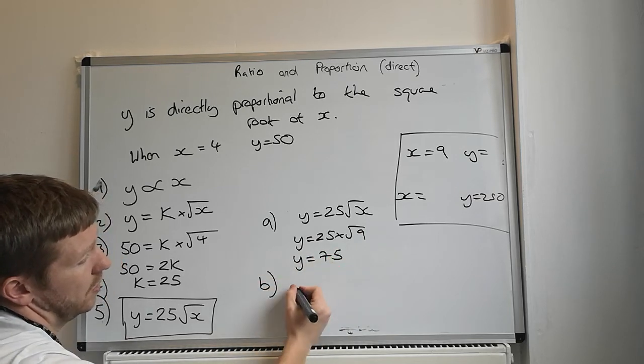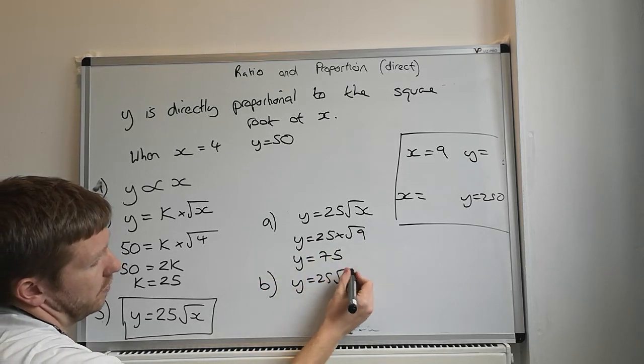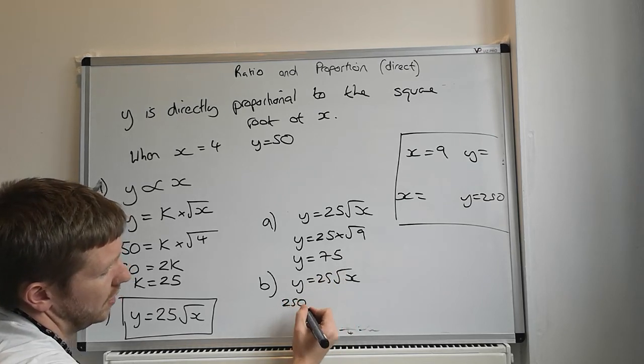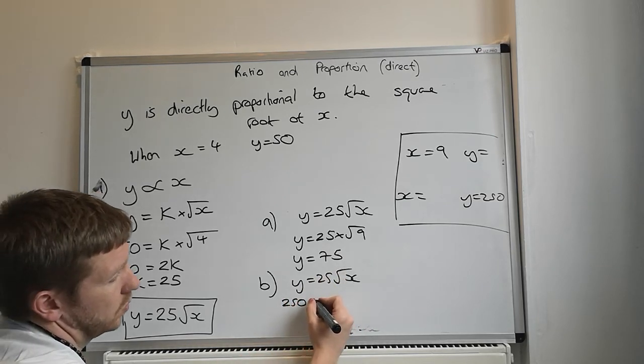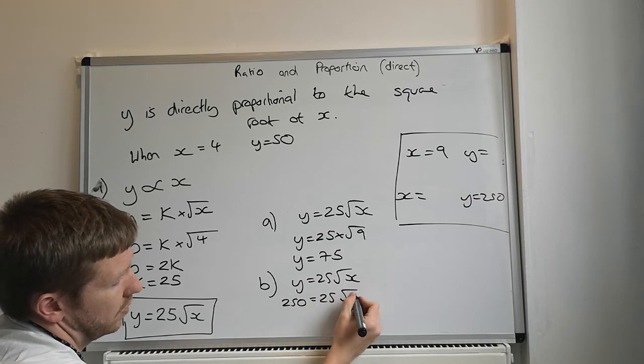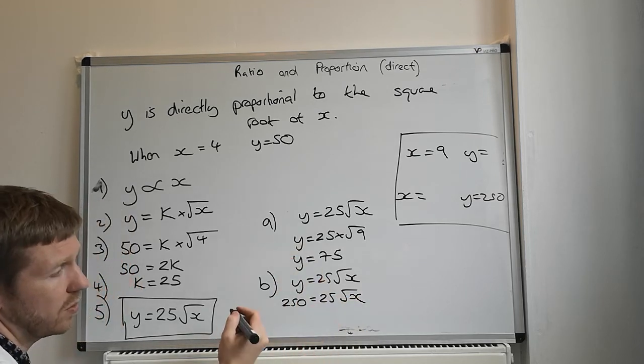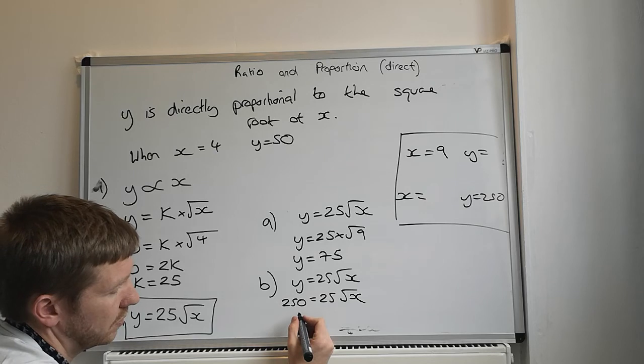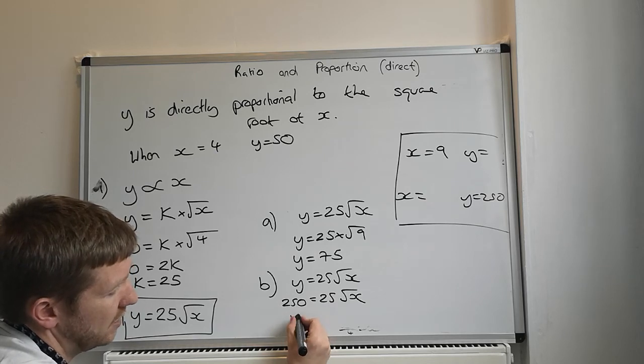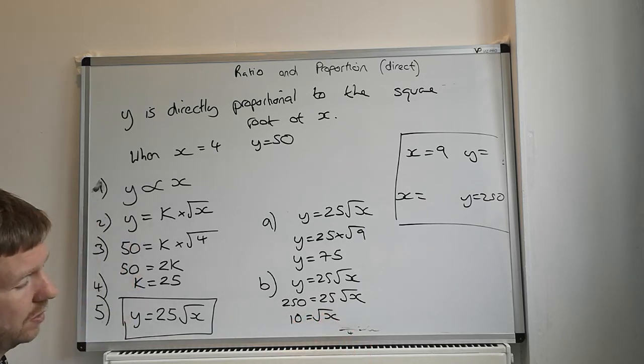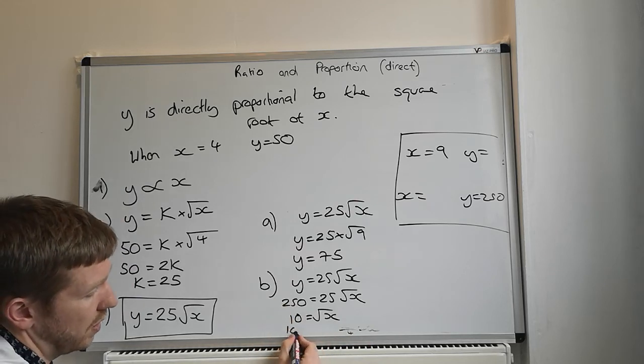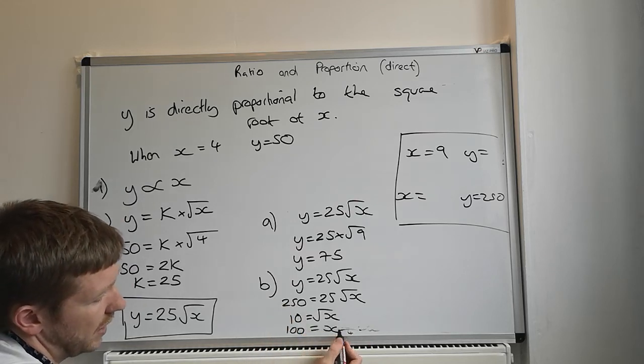Part b, y is equal to 25 root of x again. This time it's 250 is equal to 25 root of x. Divide by 25, so that is 10 is equal to the square root of x. So we square it all, so 100 is equal to x.